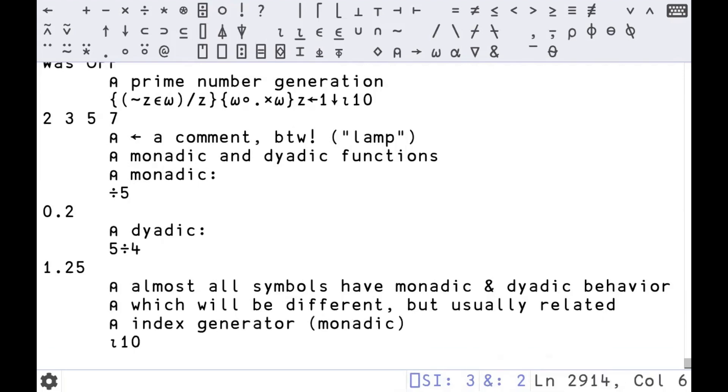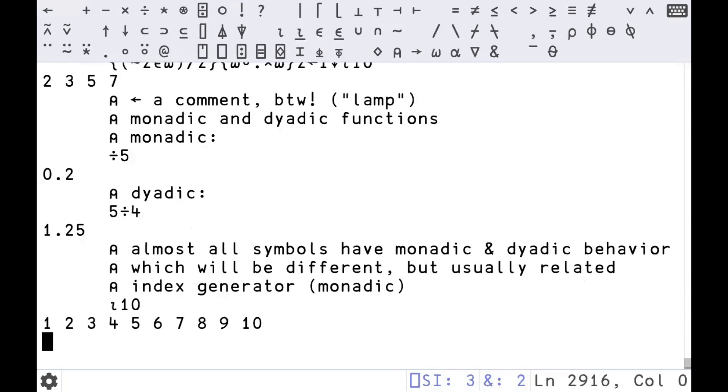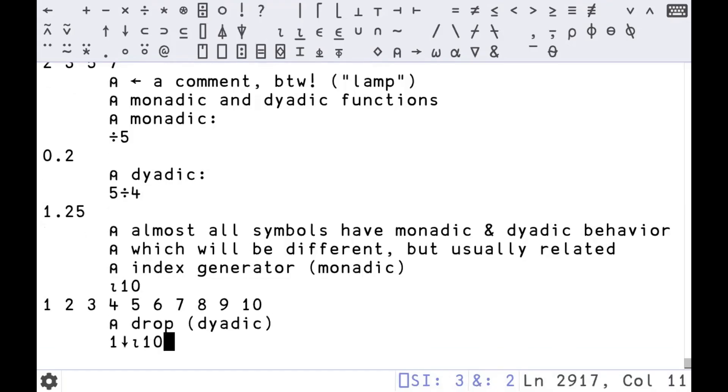Here's another function. It's called the index generator. This is iota. When you use it monadically on 10, for example, it generates all the numbers 1 through 10. It's called the index generator because it corresponds to all the indices of an array of length 10. What you might intuit from this is that APL is one indexed, but you can change that if you want. It can be one or zero indexed, which is fun when you recode.